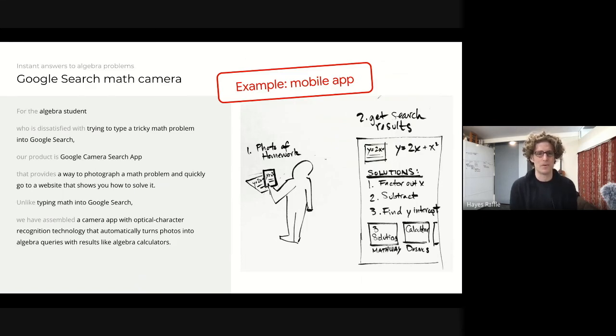So in this example, I've taken a product like Photomath or Google Lens and broken it down into this template. So you can see how the template works. We say here, for the algebra student who is dissatisfied with trying to type a tricky math problem into Google Search, our product is the Google Camera Search app that provides a way to photograph a math problem and quickly go to a website that shows you how to solve it.